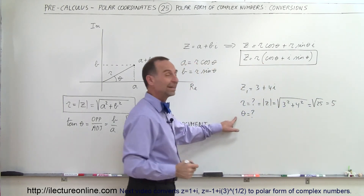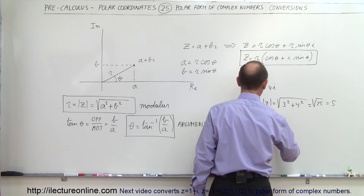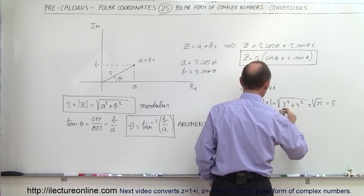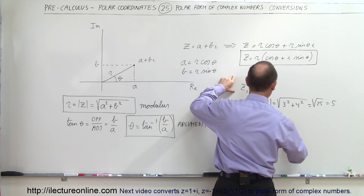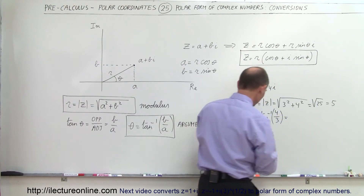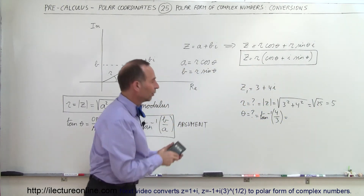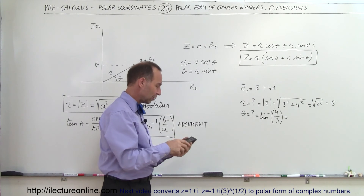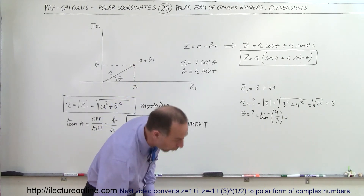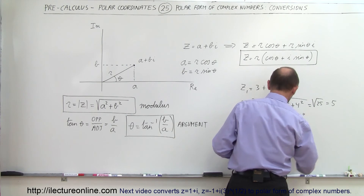Now to find the angle, theta is equal to the arc tangent of the opposite side — the imaginary part — divided by the real part. That would be the arc tangent of 4 divided by 3. Taking the arc tangent of that gives us 53.1 degrees.